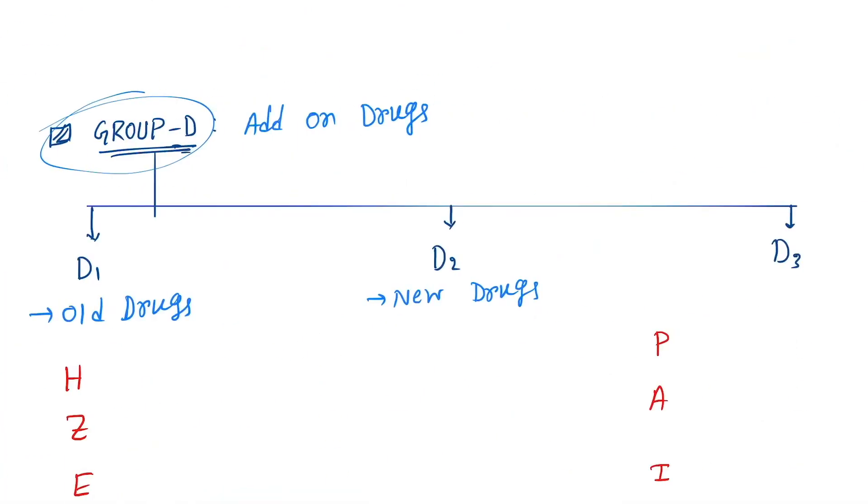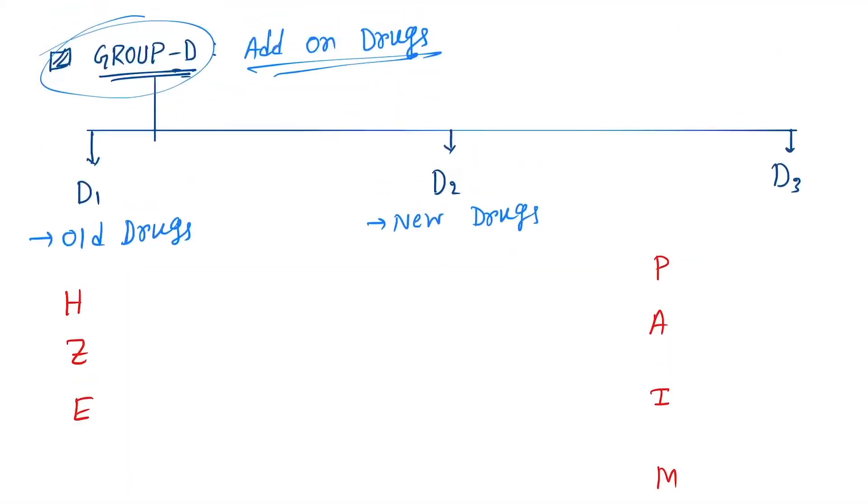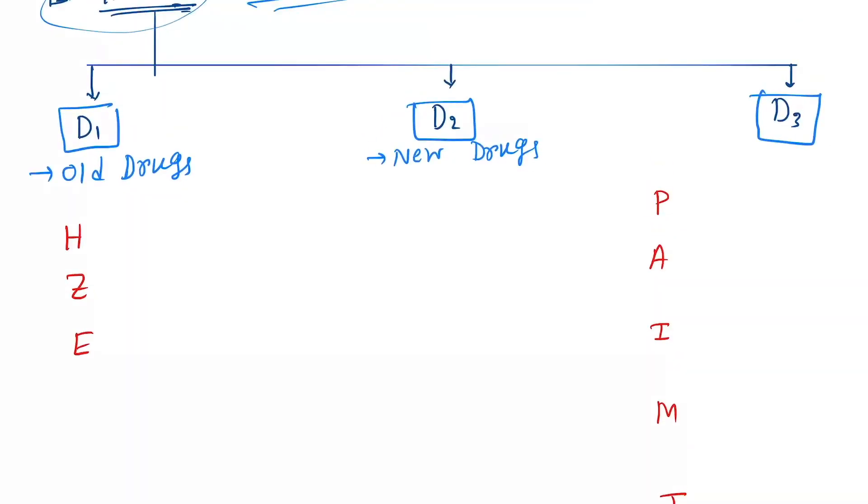Now come to group D drugs. They are add-on drugs divided into D1 class, D2 class, and D3 class. First is old drugs, so old drugs: H for isoniazid, Z for pyrazinamide, and E for ethambutol.